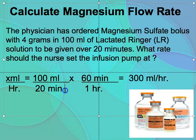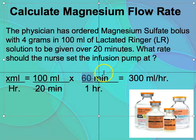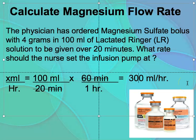Since flow rate is in milliliters per hour, we know one hour equals 60 minutes. Setting up the equation: minutes cancel out. 20 goes into 60 three times, and three times 100 equals 300. So the answer is 300 milliliters per hour — that's what the nurse is going to program the IV pump to administer.